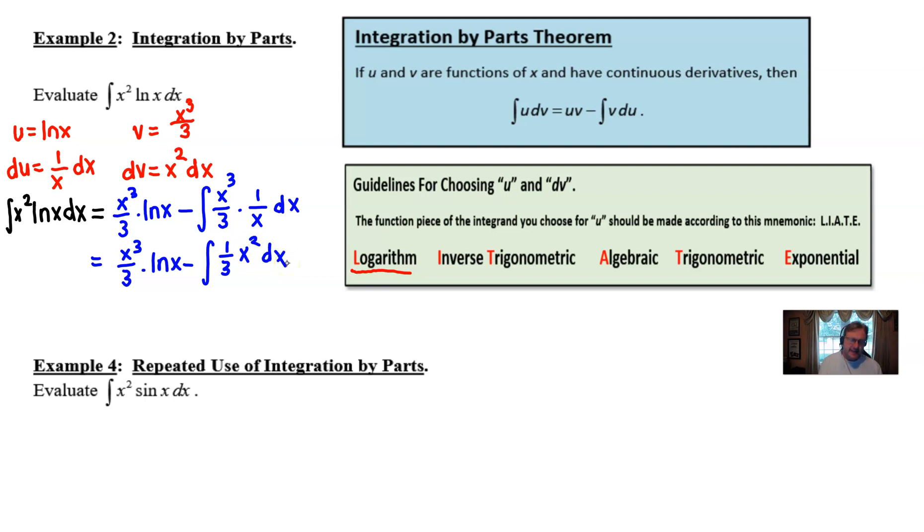So if we do that, x cubed over 3 times the natural log minus, and then this will integrate to become one third x cubed all over 3, which will ultimately become one ninth x cubed. And at this point we can go ahead and put our plus C, thinking that we probably have a correct answer.